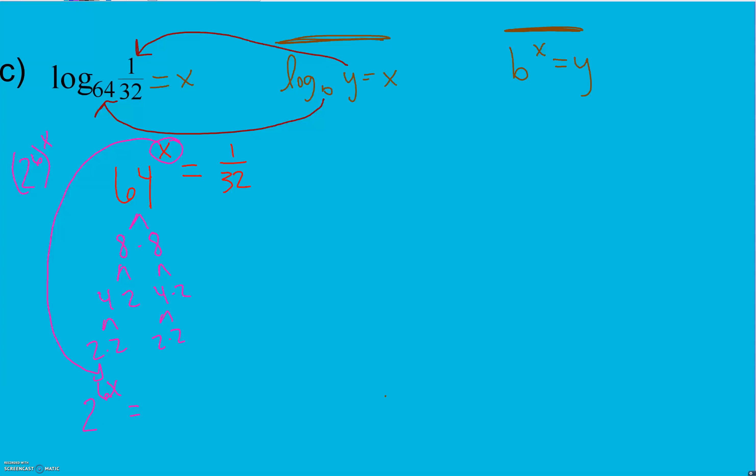We're going to do the same thing with the 1 over 32 here. But first, we need to get it to be a whole number, not a positive number, a whole number. And in order to do that, we're going to rewrite it with a negative exponent. Remember, to bring it to the numerator, we change the sign of our exponent. So 32 is 8 times 4, 4 times 2, 2 times 2, and 4 is 2 times 2.